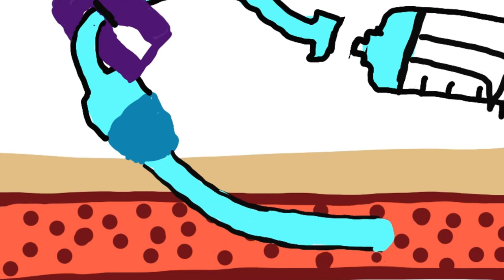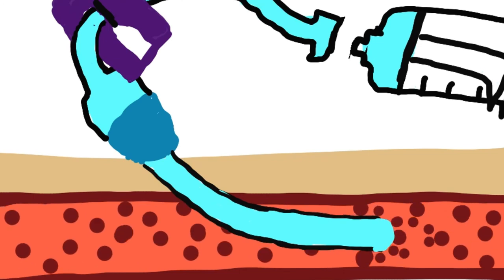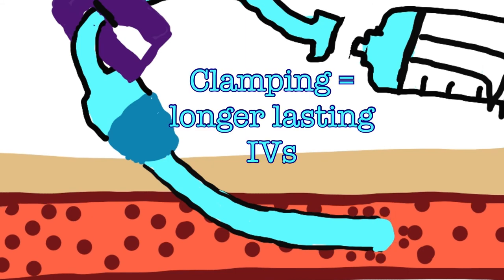Blood is not able to sit on the end of the catheter, and instead is constantly moving with the flow of blood, which means it never has a chance to clot on the end of the catheter. This leads to significantly extended lifespan of your IV catheter.